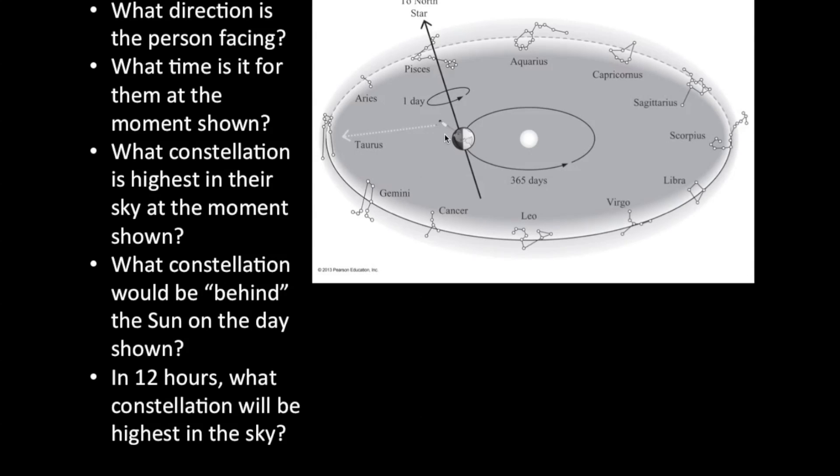And so, if I'm this person, in 12 hours, I'll move to the opposite side in this orientation. In 12 hours, what constellation will be highest in the sky? Well, 12 hours after midnight is noon.